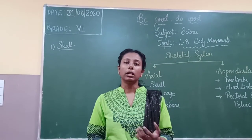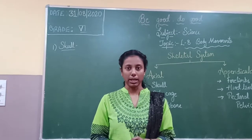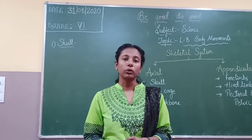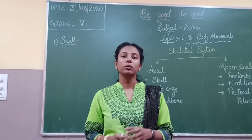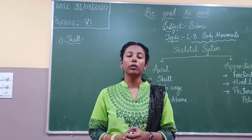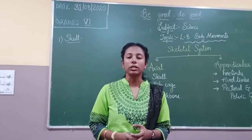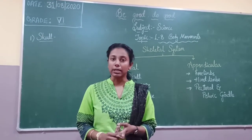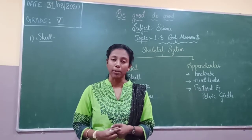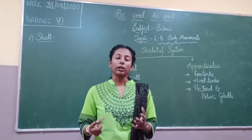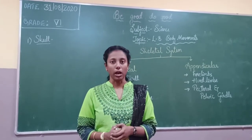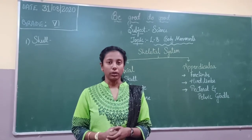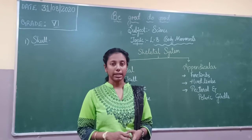The skeletal system also has long bones, flat bones, short bones, and irregular bones. In the long bones, there is a soft tissue called marrow, whose function is to produce red blood cells. So the skeletal system also helps in the production of red blood cells. It also protects the internal organs of our body. These are the functions of the skeletal system.